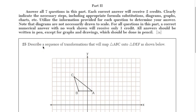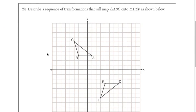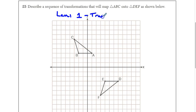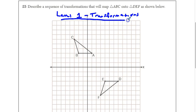Welcome to Part 2 of the June 2016 Regents. Let's get this going. For our first question, we're going to describe a sequence of transformations that maps triangle ABC onto triangle DEF as shown below. This is from Level 1 where we learned about transformations. There's not much to say about this except you have to be able to identify how to map these onto each other.